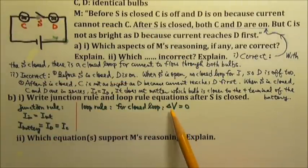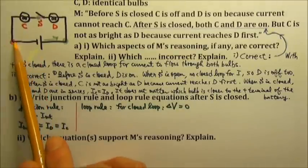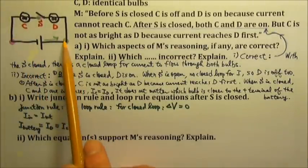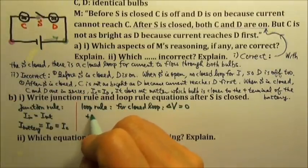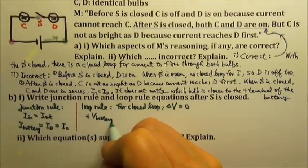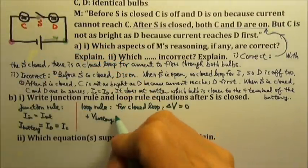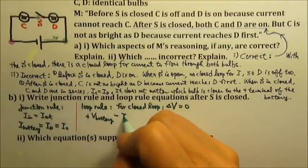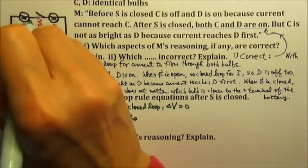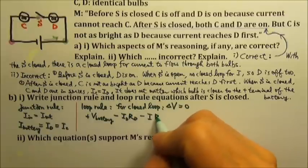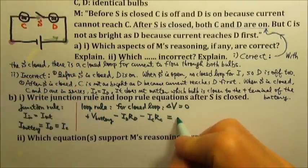The loop rule says the change in electric potential through any closed loop is zero. For this circuit there is only one loop. Starting at a point and following the current: across the battery from negative to positive terminal, the potential goes up by the battery voltage. Then following the current across the first resistor, the potential decreases by Id times Rd. Continuing to the next resistor, it decreases by Ic times Rc. Returning to the start, the total delta V equals zero.